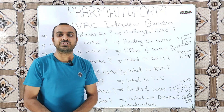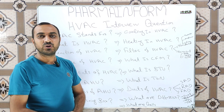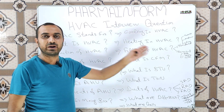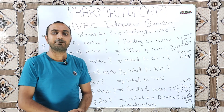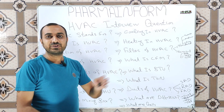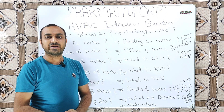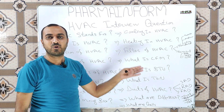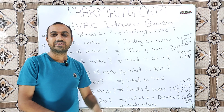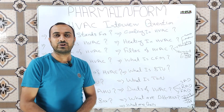The next question is: what is CFM? CFM is the cubic feet per minute — air volume is measured in CFM. The next question is: what is BTU? BTU is British thermal unit, defined as the amount of energy required to raise the temperature of one pound of water by one Fahrenheit. The next question is: what is a ton? One ton is the amount of energy required to freeze one pound of water in 24 hours.